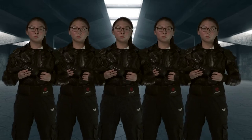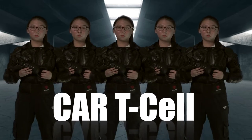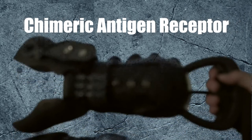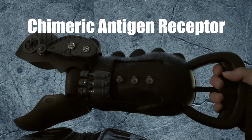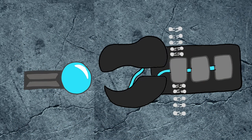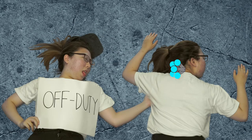So, our T cell unit soldiers, now called the CAR T cell unit, were genetically modified to have shimmering antigen receptors — CARs. These CARs are able to identify and bind to B lymphocyte antigen CD19, even with the disguised and clustered antigens.